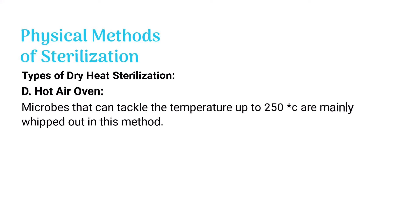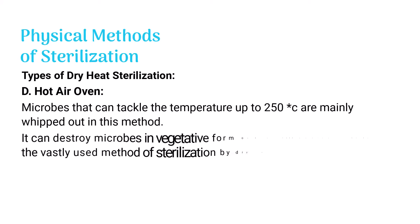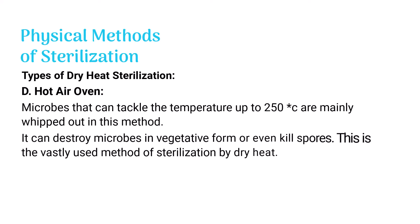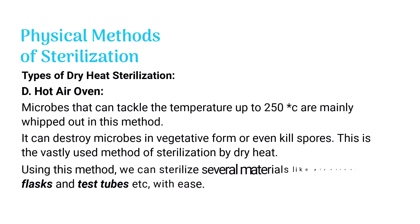The hot air oven is the most widely used method of dry heat sterilization. It eliminates microbes that can survive up to 250 degrees Celsius, destroying them in vegetative form and killing spores. Using this method, materials such as pipettes, flasks, and test tubes can be sterilized with ease.